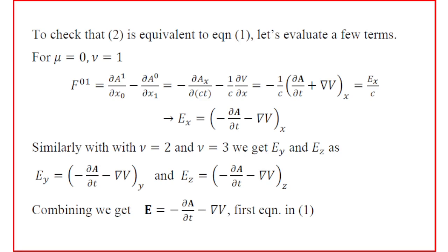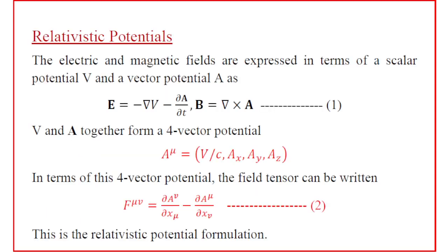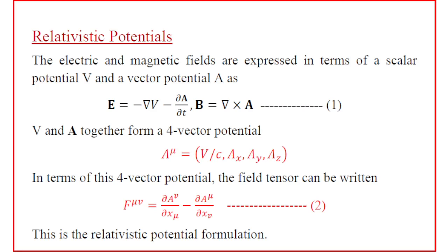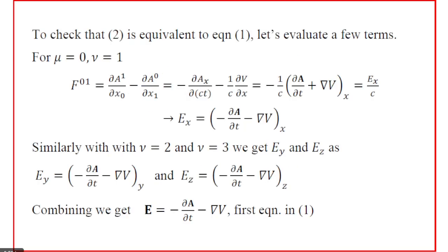So Ex = −∂A/∂t − ∂V/∂x, which is the x-component relation. This reproduces equation 1 using the Maxwell's electromagnetic field tensor. Similarly, taking ν = 2 and ν = 3, that is F02 and F03, we will get Ey and Ez. Combining these three equations, we get E = −∂A/∂t − ∇V, which is the first equation.